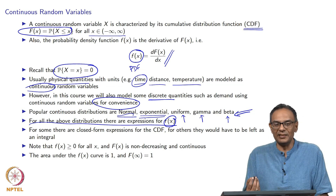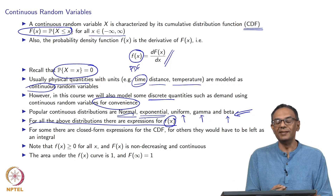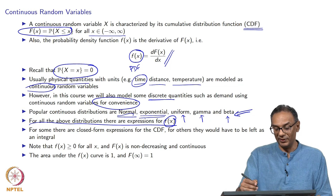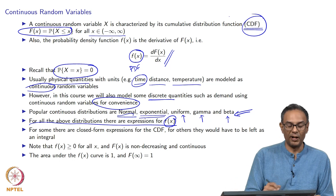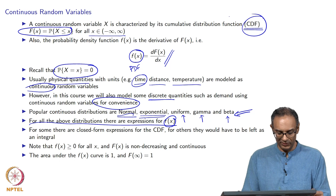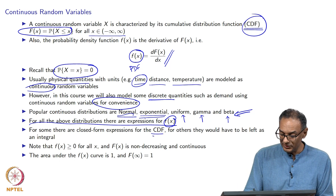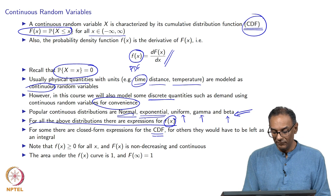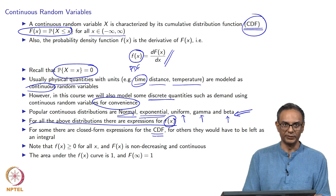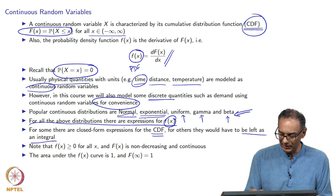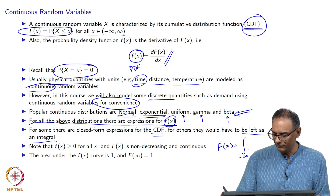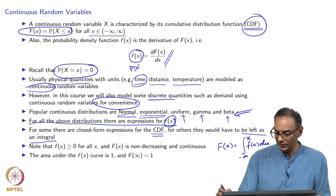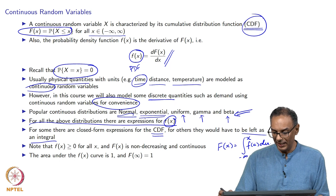The reason I prefer to define things in terms of the CDF rather than the PDF is that it is easier to write down a meaning for the CDF: it is the probability that the random variable x is less than or equal to a value x. Note that for the normal and gamma distributions, the CDF cannot be written in closed form, so we leave it as an integral.